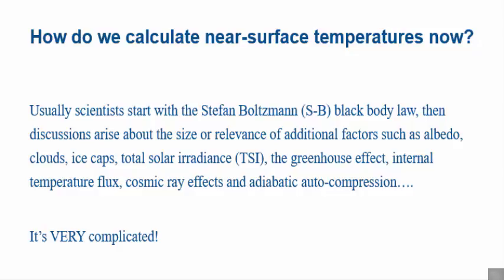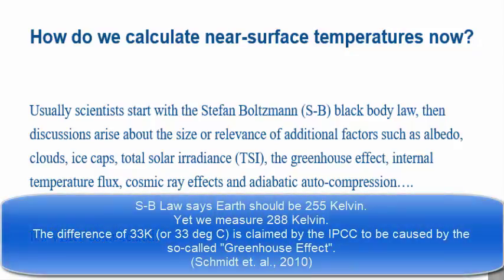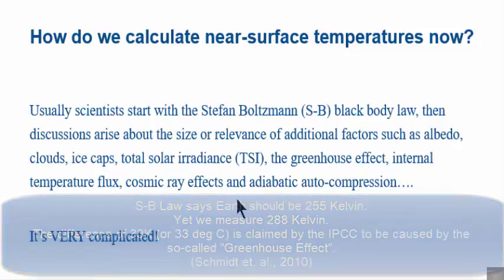So what I want to do is try and make this as clear as possible. How do we calculate near-surface planetary temperatures? Well, we start with the Stefan-Boltzmann black body law. For Earth, we work out it's 255 Kelvin for the radiating temperature. Then discussions arise about albedo, clouds, ice caps, TSI, greenhouse effect, internal temperature flux, cosmic ray effects, and someone might say adiabatic auto-compression, so it ends up very complicated.